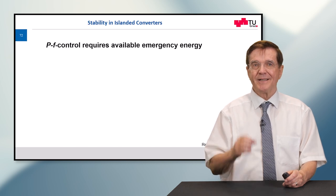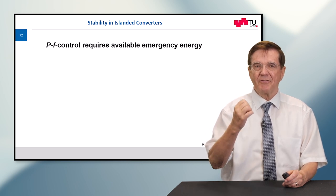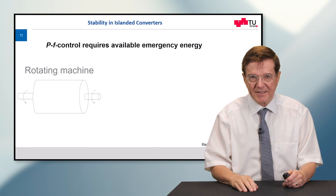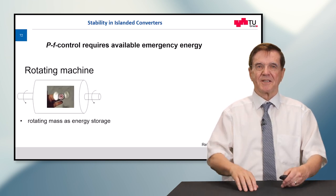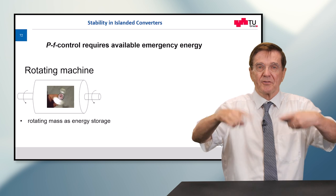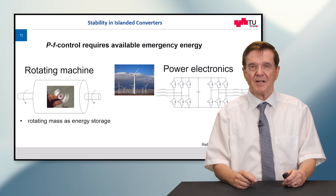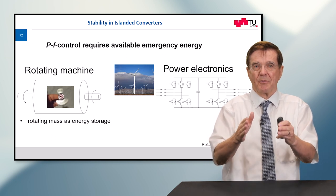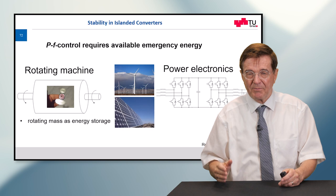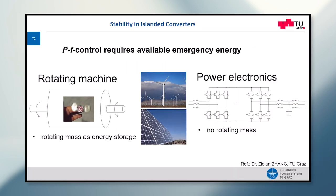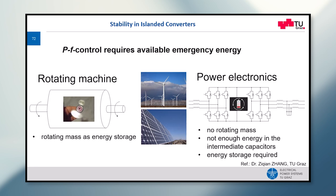What we need is, as you have seen, we need energy. There must be enough available emergency energy, which in a rotating machine comes from the kinetic energy that is stored in the rotation of the masses, of the spinning masses. Whereas in power electronics, which normally are at the interconnection point between wind farms and PV plants, there is virtually no rotating mass, not at all. So there is not enough emergency energy in the intermediate capacitors, and therefore there is some additional emergency energy needed.